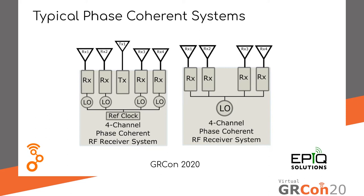Another way to do it is to take one LO and distribute it to all the mixers, so they're coming from the same exact source. This works, but sometimes it's not practical because some of the signal levels you need to drive these LOs are pretty high. Think about having to drive a +13 dBm signal into several mixers — if you have to distribute that four ways, it becomes inefficient.